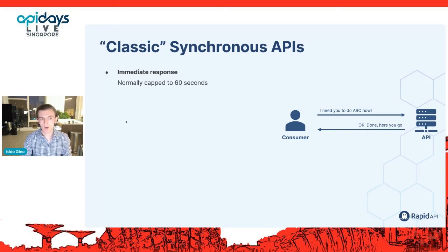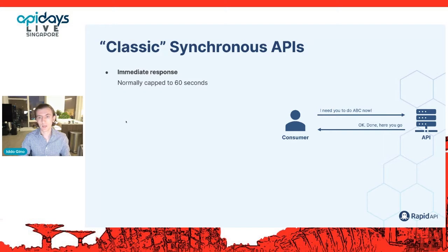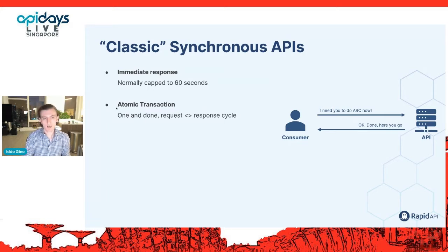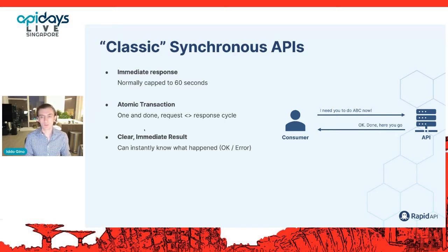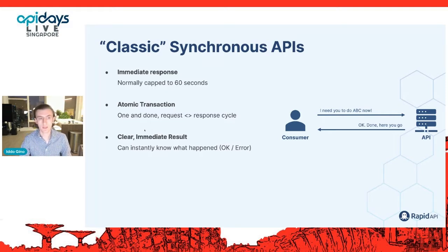When thinking about those types of synchronous transactions, there are a few common traits. First, the response is expected to be immediate — most HTTP and RESTful APIs are capped at 60 seconds, but the core expectation is you ask for something and get it immediately. Second, it's an atomic transaction — one and done: you send a request, get a response, and that's it. Third, there is a very clear and immediate result, whether that's confirmation, data, or an error. And it assumes availability — that the API is ready to respond at that very moment.